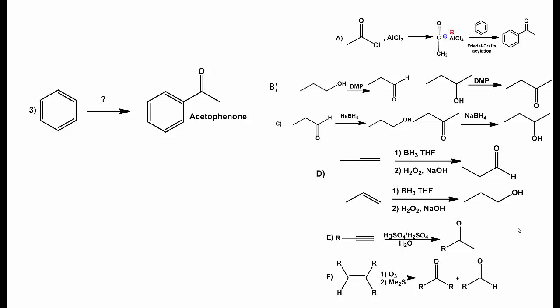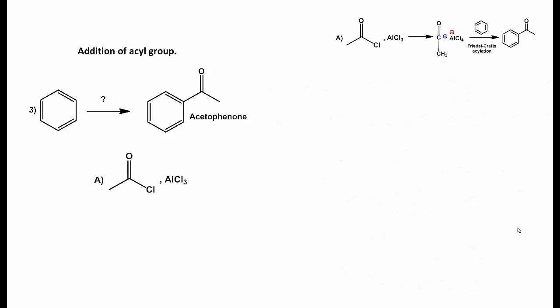Reaction 3 begins with benzene. The only way to add an acetyl group to benzene is with a Friedel-Crafts acylation reaction. Therefore, the correct reagents are A, acetyl chloride and aluminum trichloride.